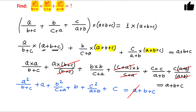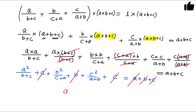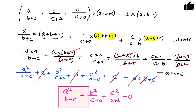Now see — this term also cancels. a cancels, b cancels, c cancels. So what we are left with is a²/(b+c) + b²/(c+a) + c²/(a+b) = 0. This was the expression we had to find, and the answer is 0.